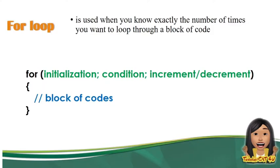Ano nga ba ang for loop? Ang for loop is used when you know exactly the number of times you want to loop through a block of code. Ito yung sample syntax ng for loop: for initialization, the condition, increment or decrement, then the block of code.